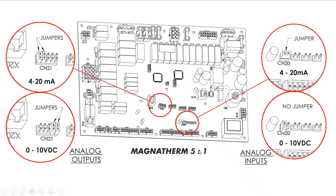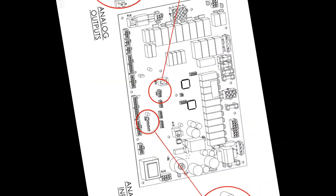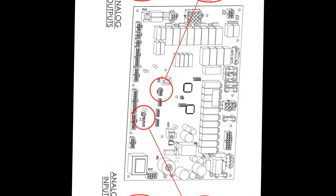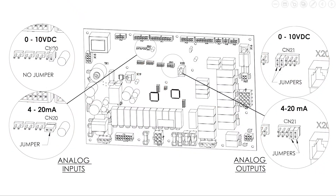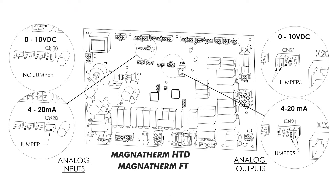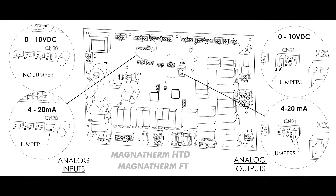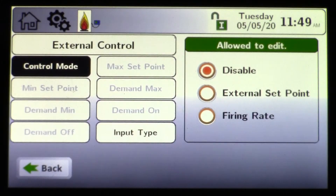Depending on the product — for example, the Pennant might have this control board installed horizontally, and these would be the positions of the pins. However, some other products like Omni Therm and Magna Therm require you to identify where those pins are, put the pins in the correct position, and then get into the programming.